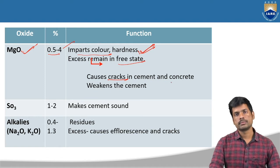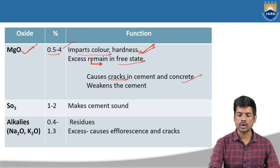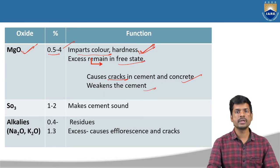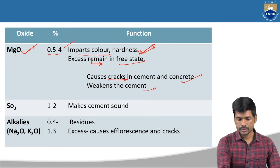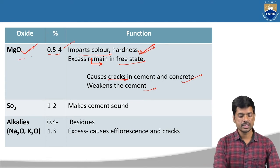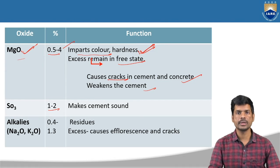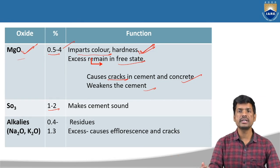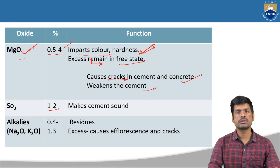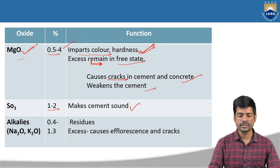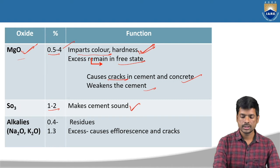Due to this particular magnesium oxide, the cracks will be developing in cement and concrete — in both materials. And it weakens the cement, going to reduce the properties like strength. Next, sulfur trioxide, SO3 — the percentage will be around 1 to 2%. This is going to make the cement sound, meaning the expansion will be reduced and the cracks will be reduced. We can make the cement ideal — without any failures, we can reduce the failure of the cement.